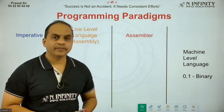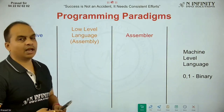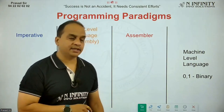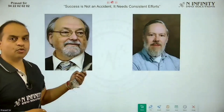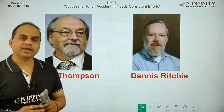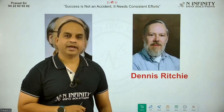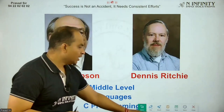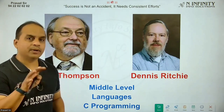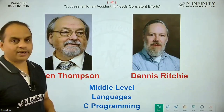As applications grew bigger and computer use increased, assembly language programming was not sufficient to program large applications. So in 1969, two fellows — Dennis Ritchie and Ken Thompson — gave two very amazing contributions to the computing world: the first one is the C programming language and the other one is the Unix operating system. The C programming language comes under the category of middle-level language.